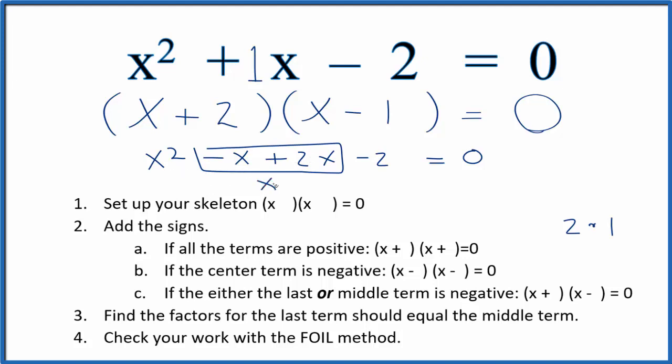So x squared plus x minus 2 equals 0, same thing as we have up here. So this is correct.